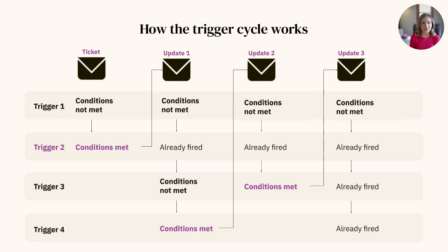So a trigger might run or be checked several times, but it will never fire more than once in the same cycle. This is because the trigger is not checked again after it fires, and a trigger will not fire at all during the cycle if the conditions are not met.